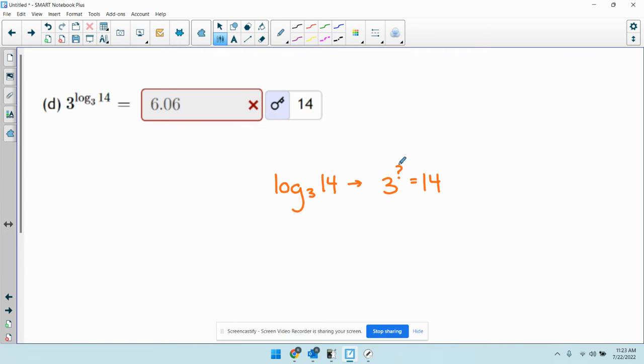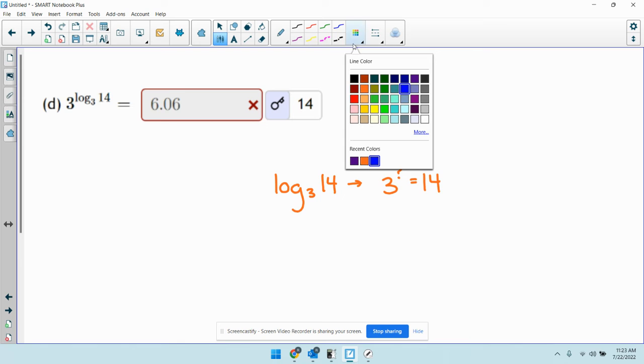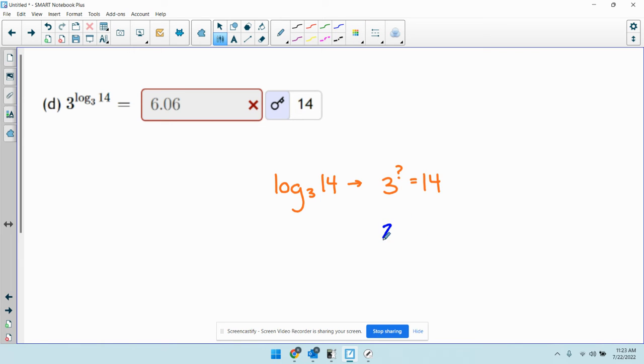3 to what power equals 14? It doesn't really matter what we get here. Let's just say the answer is 2.6. Let's just say question mark equals 2.6. So then we would say, oh, hey, 3 to the power of 2.6 equals 14. Now raise 3 to the power. This thing just gave me 2.6. 3 to the power of 2.6. Well, we just said that gives me 14. So that's why we're getting an answer of 14.